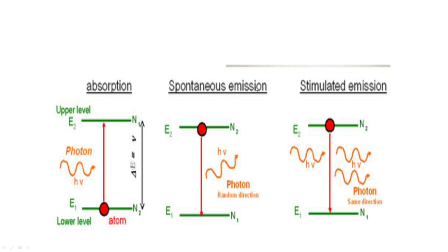In the spontaneous emission process, without any external help, the excited state atoms automatically return to the ground state, emitting one photon of light — that is ordinary light only. In the stimulated emission process, one photon energy is incident on the excited state atom; when that atom returns to the ground state, two photon beams are emitted. Two photons incident on two atoms produce four photon beams — this is amplification and multiplication of the light signal, producing laser beams.